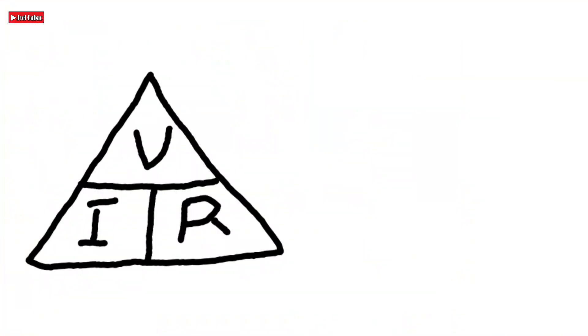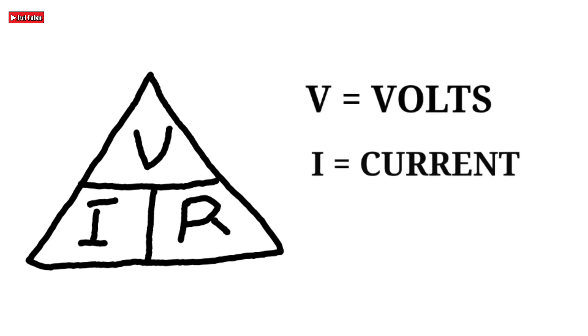This is the Ohm's Law triangle. Here we have V-I-R: V is for volts, I is for current, and R is for resistance.